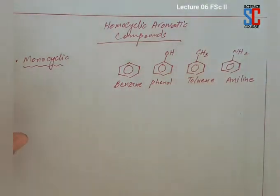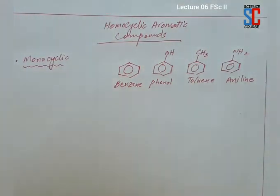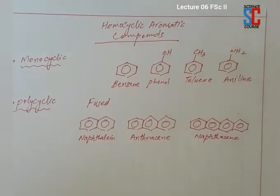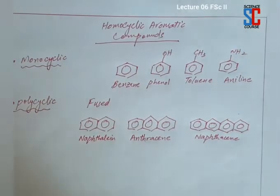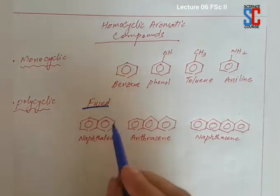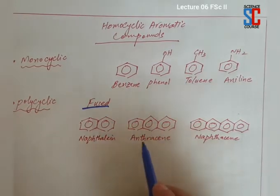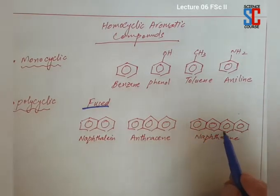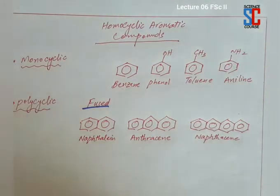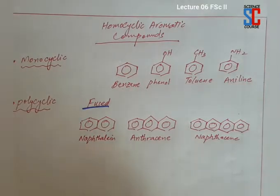Polycyclic aromatic compounds are those which have more than one benzene ring, and they have two more categories. When there are more than one benzene ring, the rings may be fused or isolated. When two rings are fused this is called naphthalene. When three benzene rings fuse this is called anthracene. When four benzene rings fuse this is called pyrene. When five benzene rings fuse this is called hexacene, then heptacene, octacene and so on.